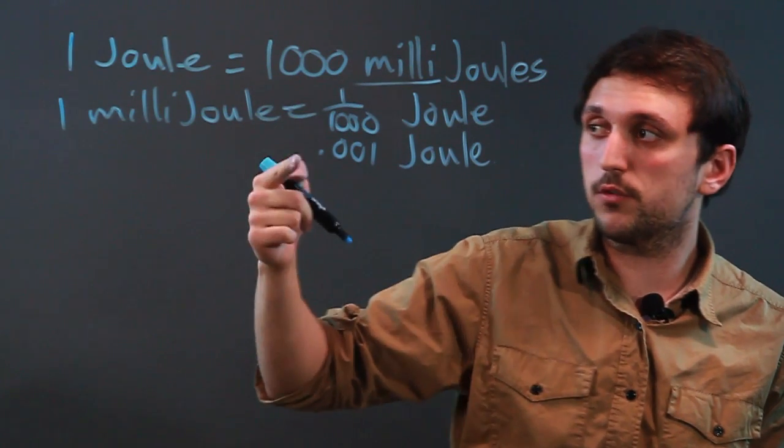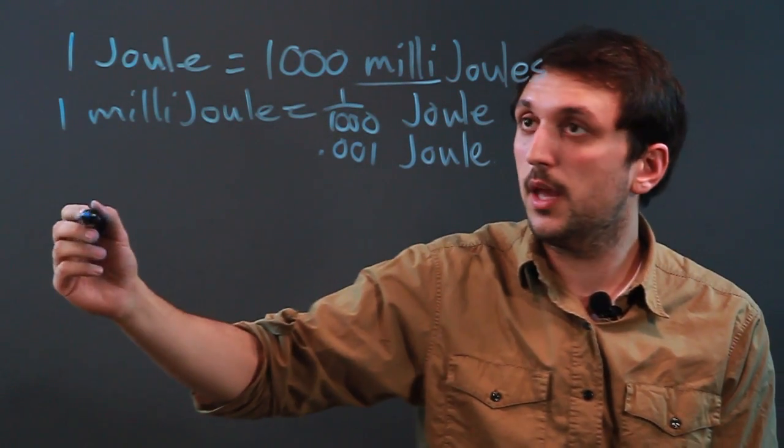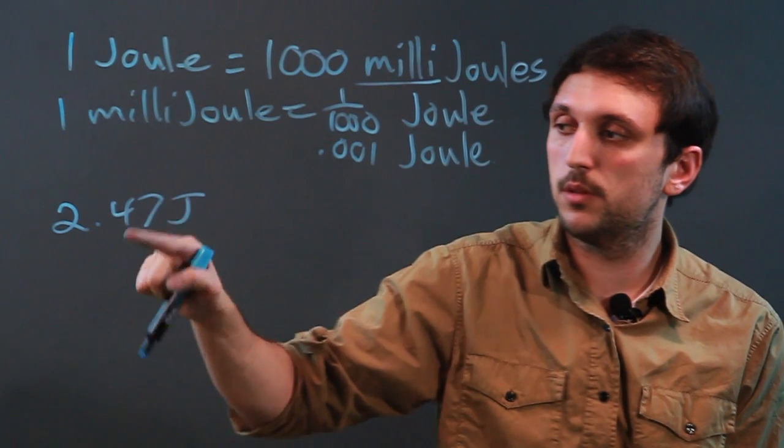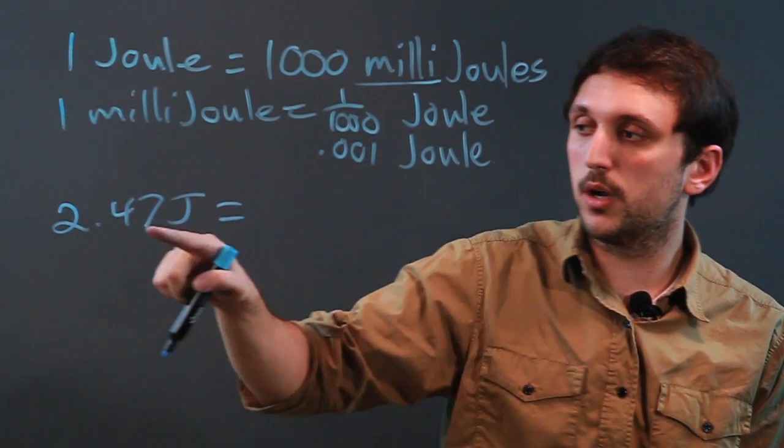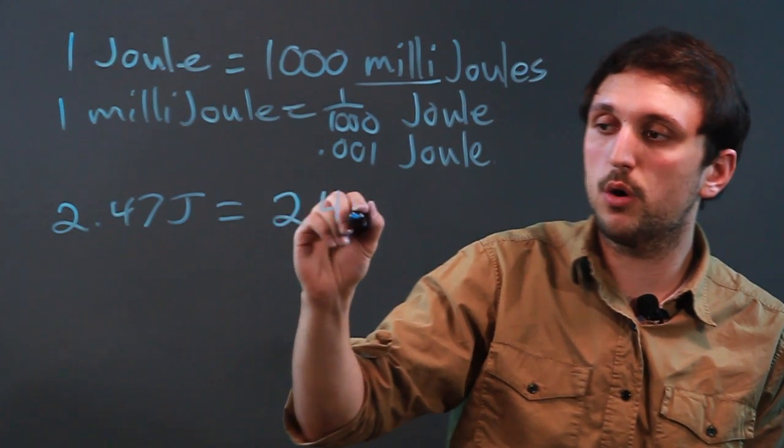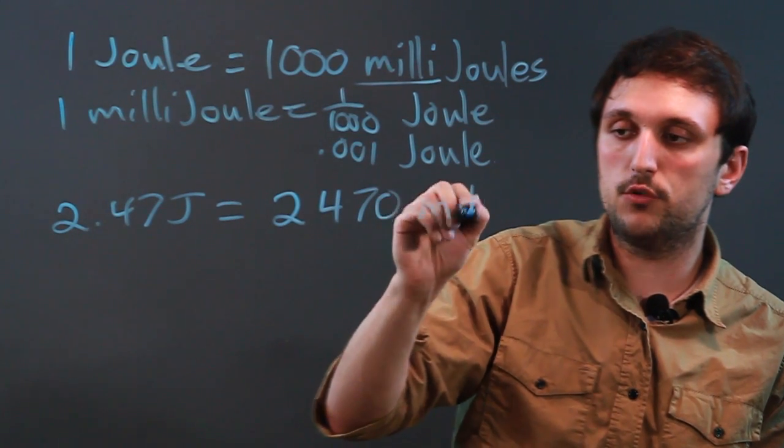So, we're going to start working with abbreviations now, and let's say we have 2.47 joules. Well, that's going to equal, we're going to move this over a few, and it's going to equal 2,470 millijoules.